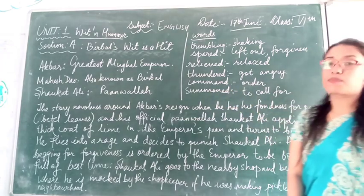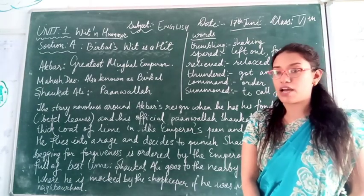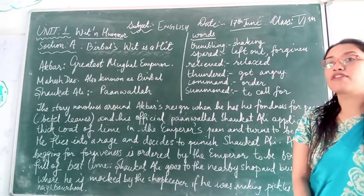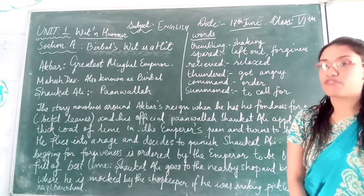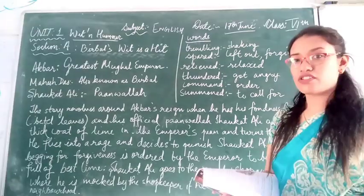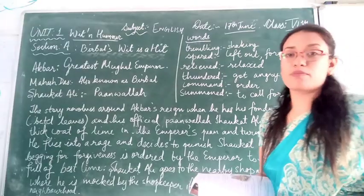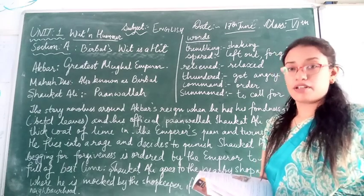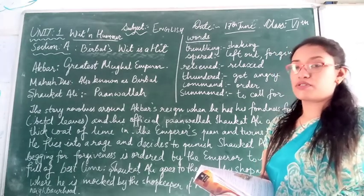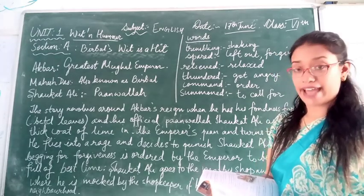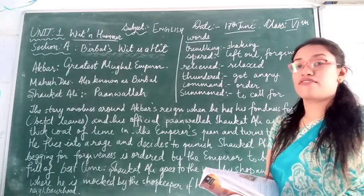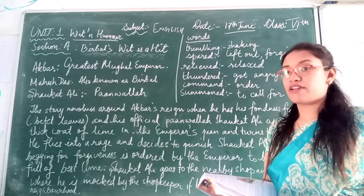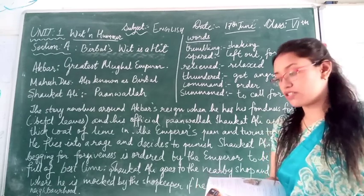Now to explain about the chapter — if you have read it or for those who have not read it, I would like to give a brief summary. In the chapter, on page number 12, there is a story where Emperor Akbar gets into anger, filled with rage, and tries to punish Shaukatali.